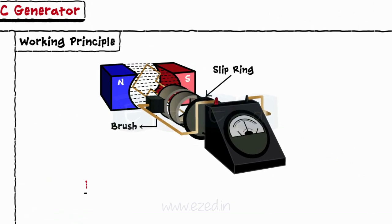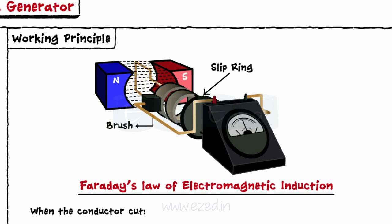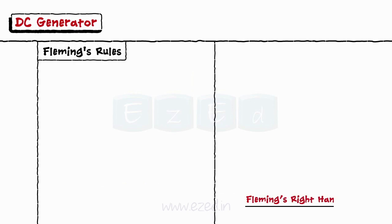DC generator works on Faraday's laws of electromagnetic induction which states that when the conductor cuts the magnetic flux lines, an EMF is induced in it. The direction of this induced EMF is stated from Fleming's right hand rule.